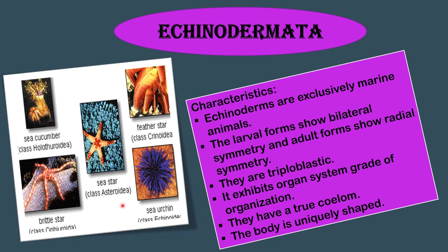Echinoderms are marine animals with a tough, spiny skin. Their body usually has a central disc from which five or more arms radiate outwards, giving them a star-like appearance. There is a mouth on the lower side of the body and an anus on the upper side. These animals move with the help of special organs called tube feet. Starfish, sea urchin and brittle star are examples of echinoderms.